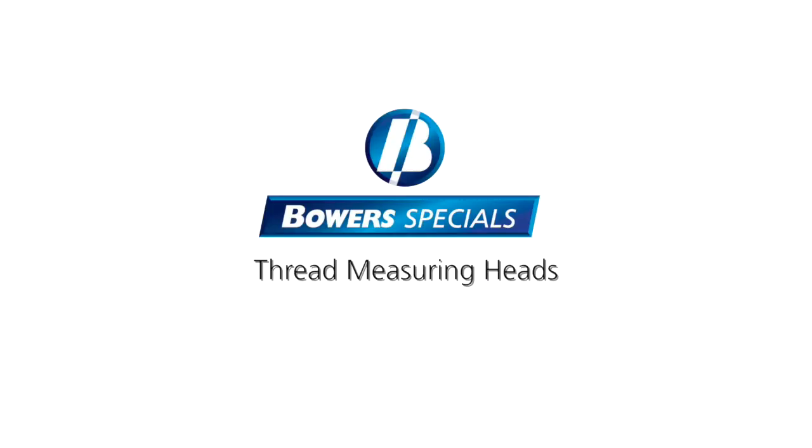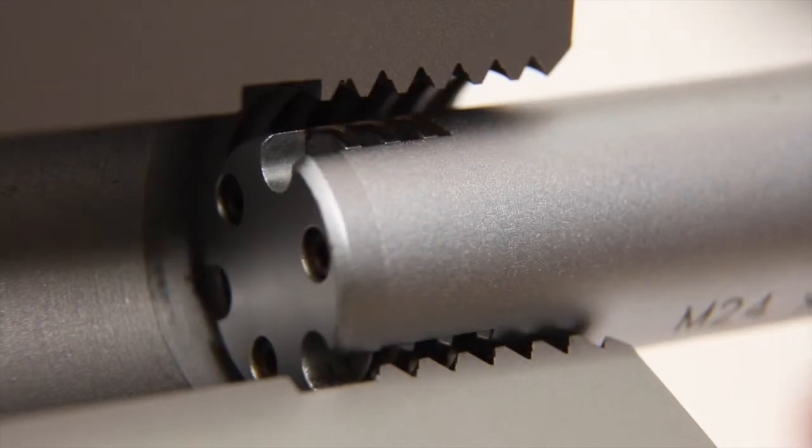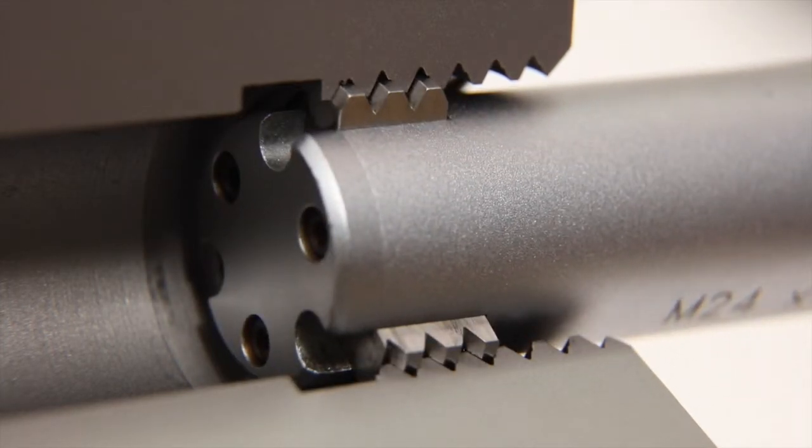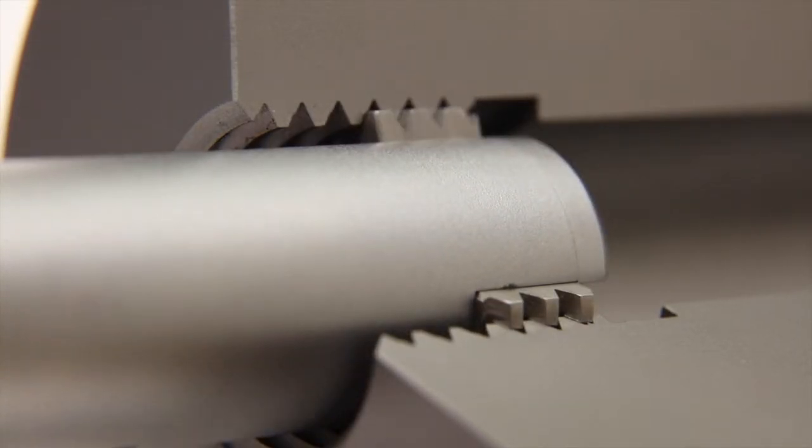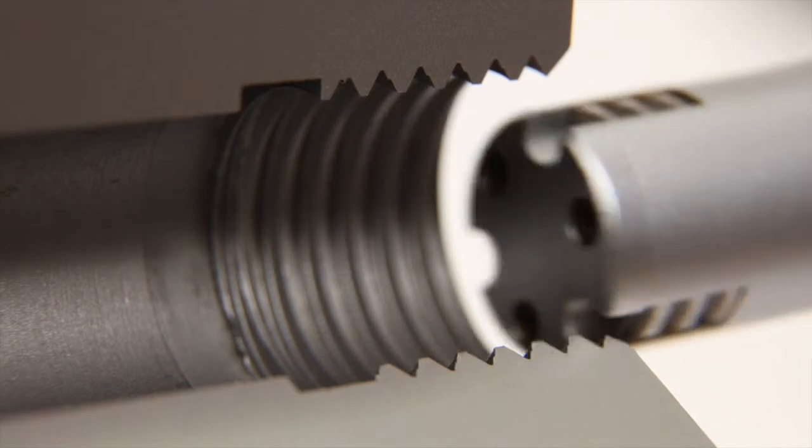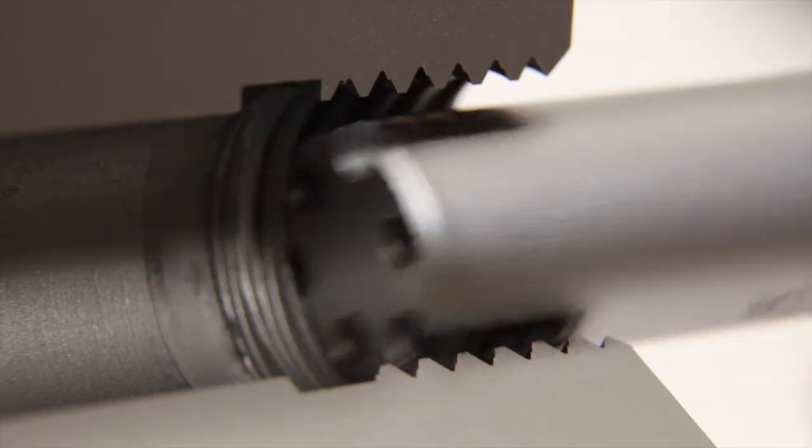Moving on to threads, Bowers thread measurement heads are typically used for the inspection of effective pitch diameter. Heads are also available for the inspection of minor diameter, major diameter and true pitch diameter. The functional pitch diameter head can be identified by its multiple thread form anvils.